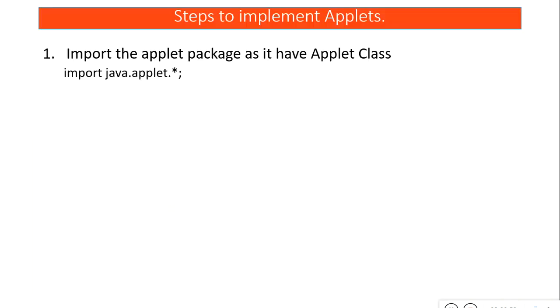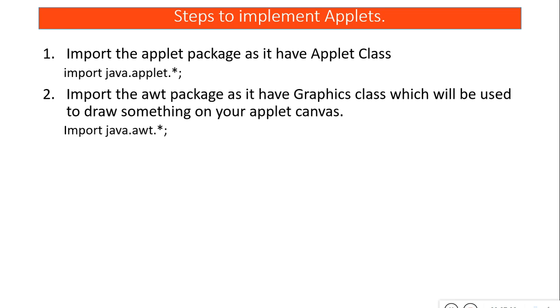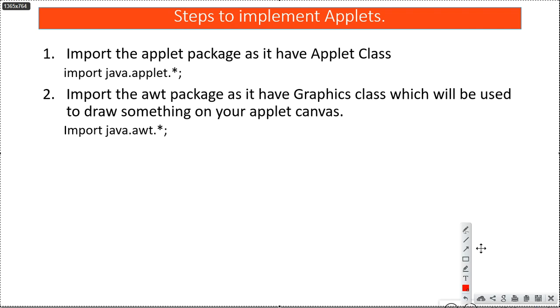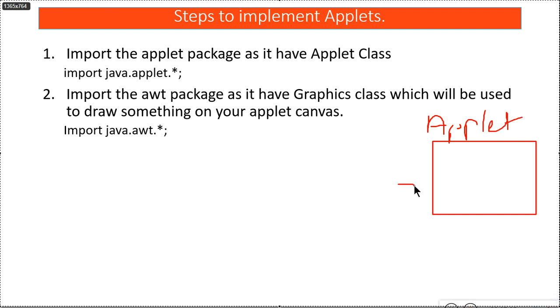Let's move on to the steps to implement applets. Step one: import the applet package. Step two: import the AWT package. When you create an applet, it gives you a canvas — an empty box where you can draw anything — but the applet package does not have any tool to draw or create anything in that window.